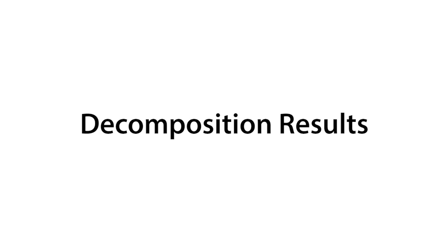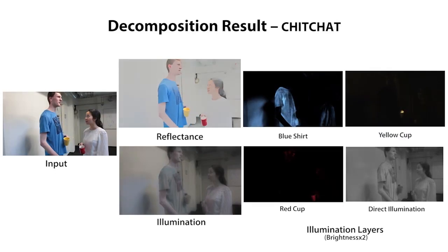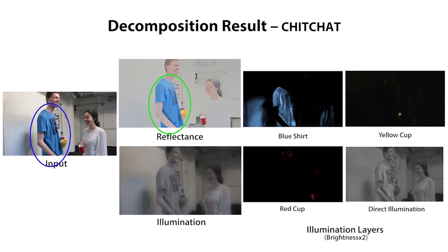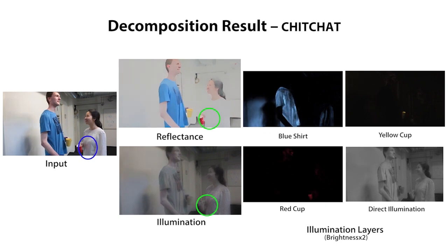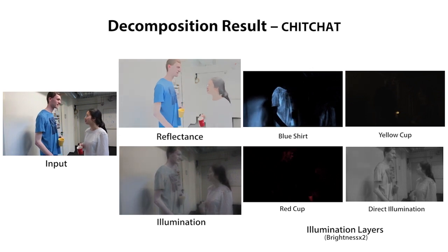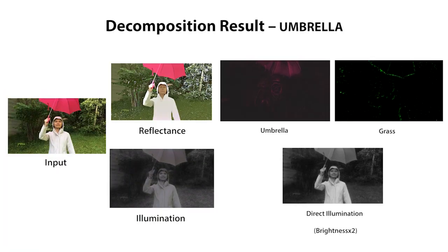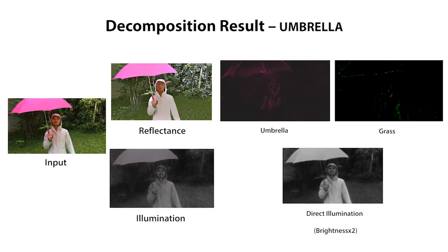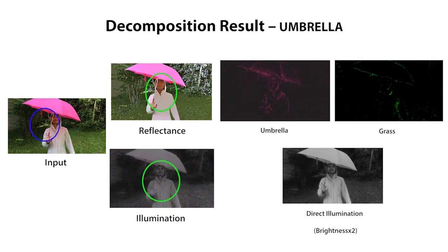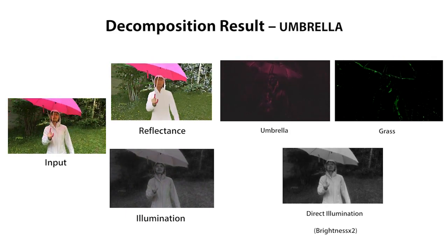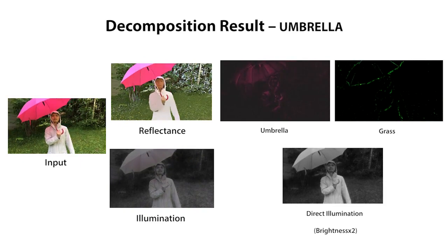Let's look at some of our decomposition results. This sequence exhibits strong and dynamic global lighting effects on the wall and the white shirt. We successfully decompose the blue shirt into the reflectance and the blue color spill into the illumination. The subtle spill from the red cup is also correctly placed in the illumination. This sequence contains strong color spills from the pink umbrella and the green forest. Note the stability of the estimated reflectance on the face and the jacket. The combination of the pink and green color spills on the face are accurately decomposed into the indirect illumination components.